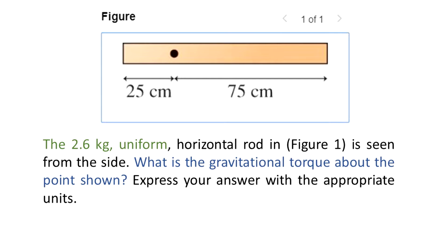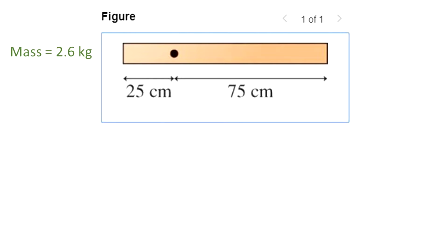So from this we extract that we want to know what is the torque done by gravity on this rod. The black dot represents the pivot point and we see that the pivot point is not in the center.